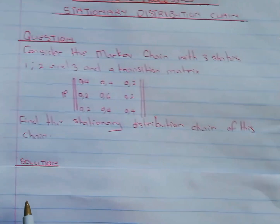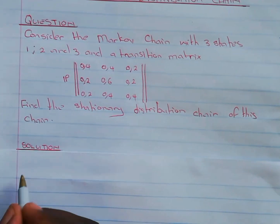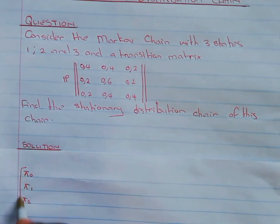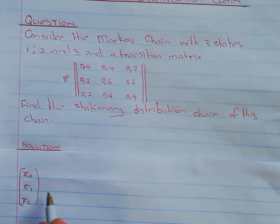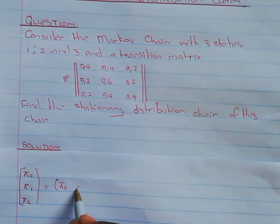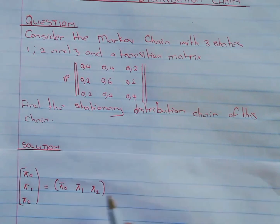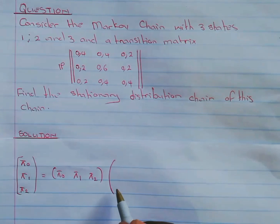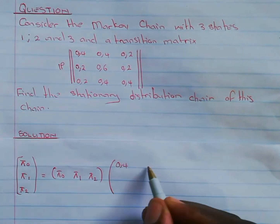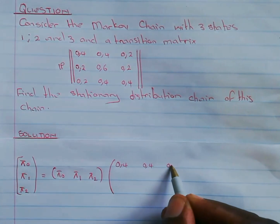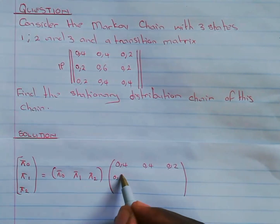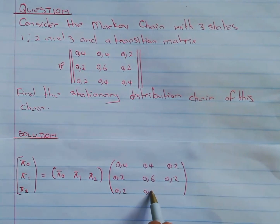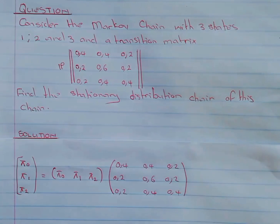The stationary distribution is given by [π₀, π₁, π₂], and we write it in matrix form as [π₀, π₁, π₂] equals [π₀, π₁, π₂] multiplied by the given transition matrix: [0.4, 0.4, 0.2; 0.2, 0.6, 0.2; 0.2, 0.4, 0.4]. This is the equation in matrix form.